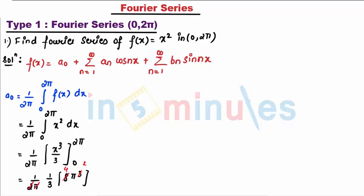So the value of a₀ is nothing but 4π² divided by 3.